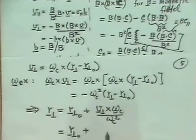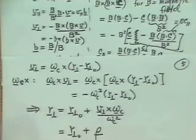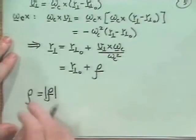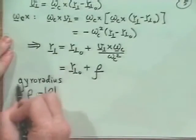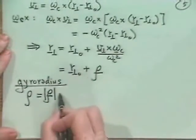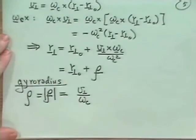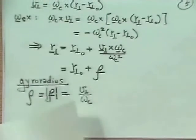It's often convenient to define a gyro radius rho — often called the gyro radius — where the magnitude is just V_perp over omega_C. We're going to sketch this and then come back to estimate how big a gyro radius would be.